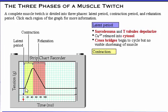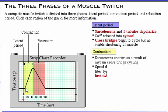During the contraction phase, the sarcomeres shorten as a result of myosin cross bridge cycling. The contraction period starts with the onset of shortening and continues until the peak of developing tension. The speed with which this phase occurs depends on the weight of the load being lifted and the type of fibers contracting — slow twitch fibers or fast twitch fibers.